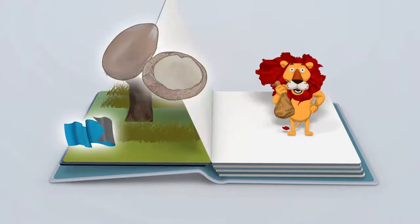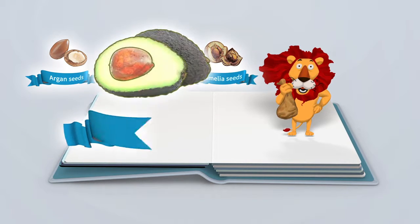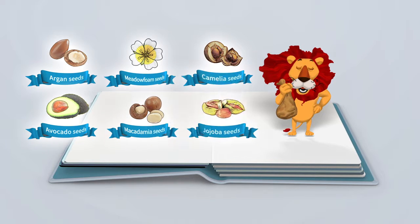They were argan seeds, meadow foam seeds, camellia seeds, avocado seeds, macadamia seeds, and jojoba seeds.